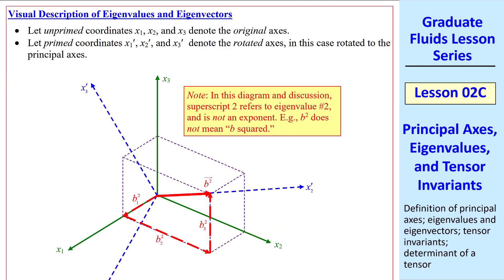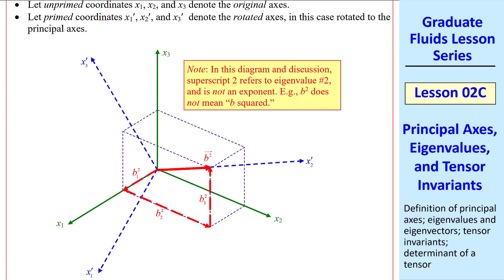The eigenvector corresponding to the second eigenvalue has three different components, b1 superscript 2, b2 superscript 2, and b3 superscript 2, and similarly for the third eigenvector. Keep in mind that these vector components are expressed in the original unrotated coordinate system. Think of it this way. We're just rotating the axes in our mind, but we're always in the same original coordinate system to express these eigenvectors. I typed all this up to make a visual description. The original axes, x1, x2, and x3, are in green without primes. Primed coordinates, x1, x2, and x3 prime, are the rotated axes. In this case, they're rotated to the principal axes.